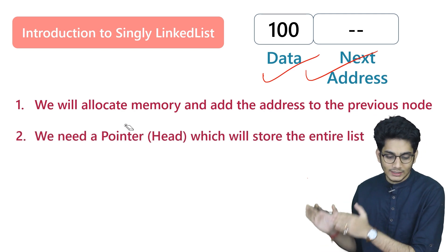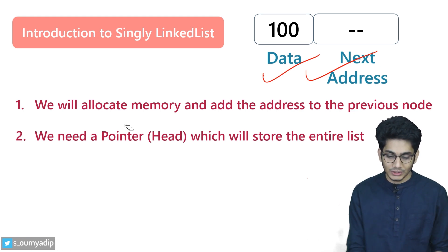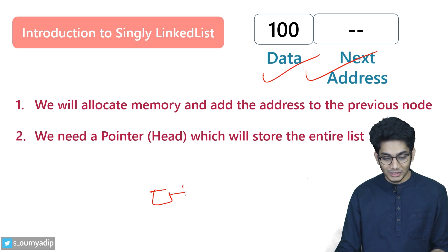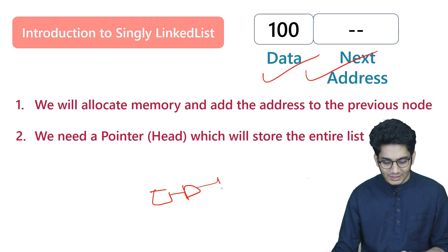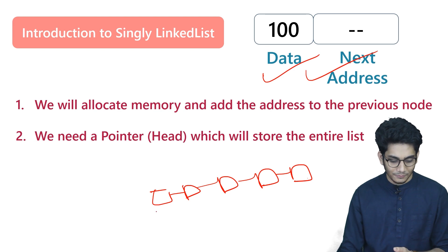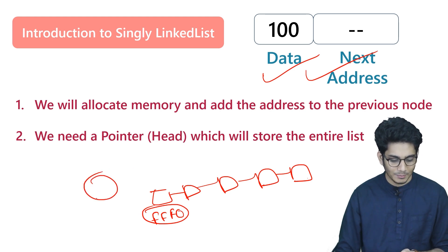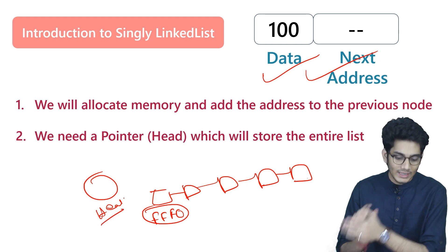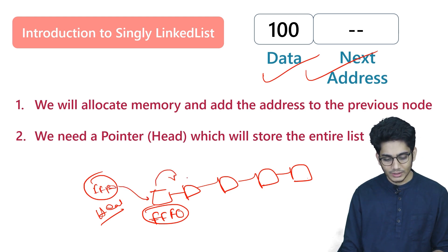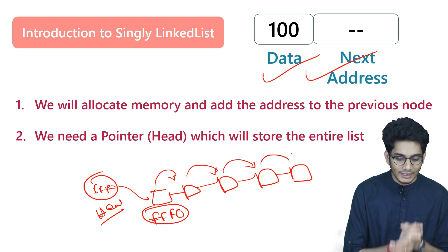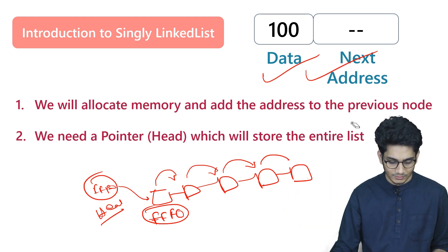We need a head pointer, which stores the first address and allows us to traverse the entire list. One pointer can hold only one memory address, so it cannot hold all the memories of the list. So we store the first address, say FFF0, into a head pointer. Using the head pointer we can traverse the entire list — it holds the first address and from there we can access everything.